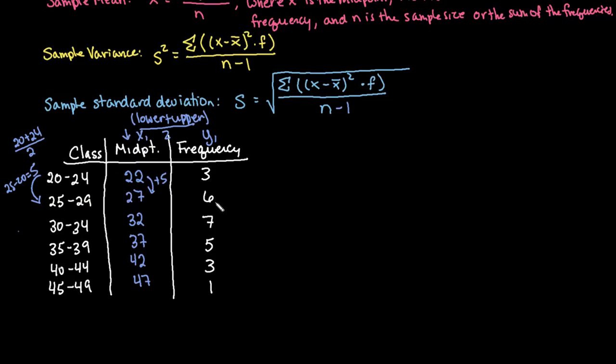And we can see that we have a total of 25 items. The 25 items is because if I were to add this up, I would have 3 plus 6 is 9, plus 7 is 16, plus 5 is 21, 24, and then 25. So if I added up this column right here, the sum of my frequencies is my n, and that gives me a total of 25. So that's why there's 25 in this list.